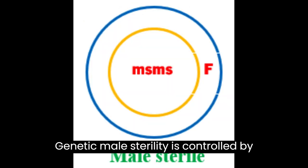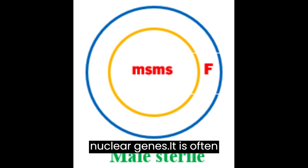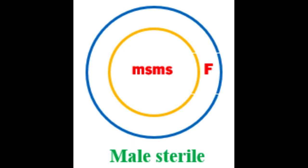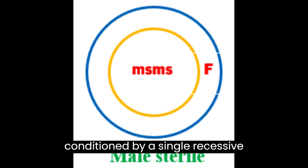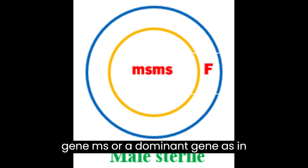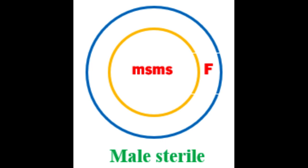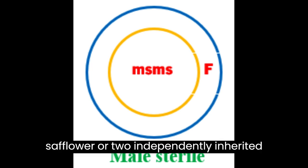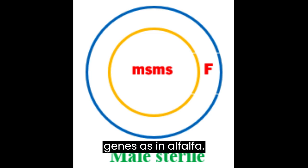Genetic male sterility is controlled by nuclear genes. It is often conditioned by a single recessive gene (ms), a dominant gene as in safflower, or two independently inherited genes as in alfalfa.